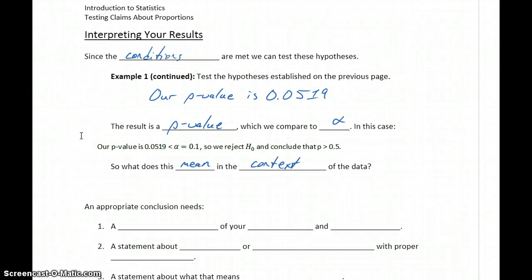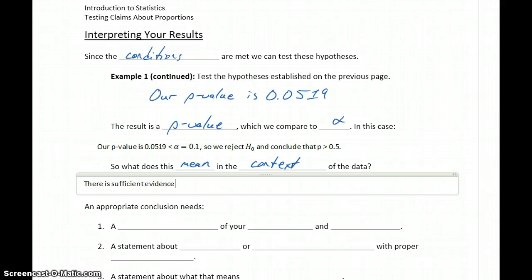So now we want to state what that means in the context of our data. So what we're saying is, there is sufficient evidence to conclude that the majority of countries who participate in the Olympics win at least one gold medal.